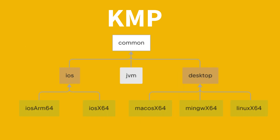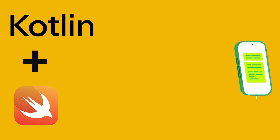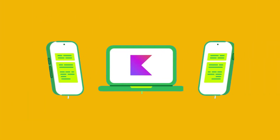KMP allows you to write shared code for common tasks and also platform-specific code when needed. It supports Kotlin Native, which compiles Kotlin code to run directly on devices without extra software. You can also use Kotlin with other platform-specific languages like Swift, with an easy Gradle setup and many supporting libraries. KMP is great for creating apps that work on multiple platforms, especially mobile apps for both Android and iOS, and also desktop.